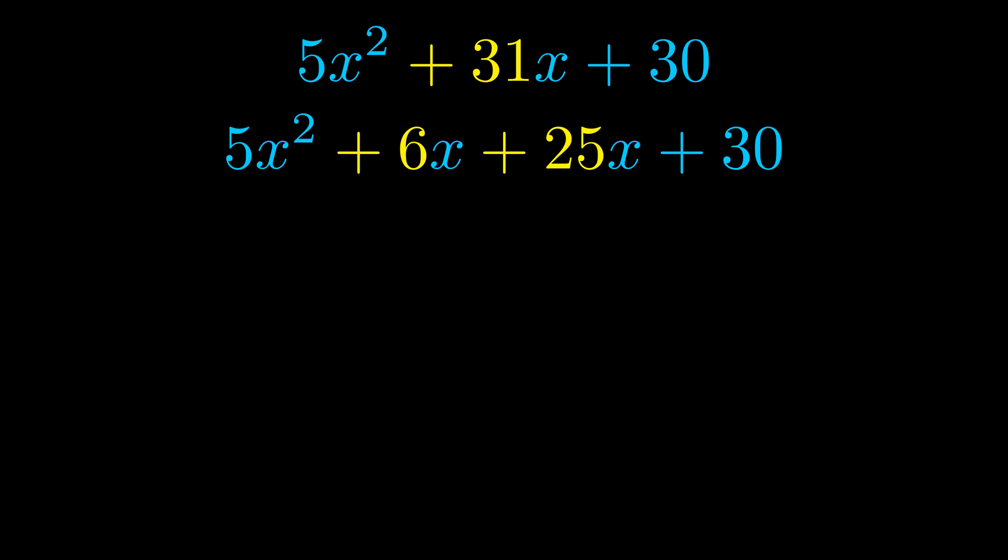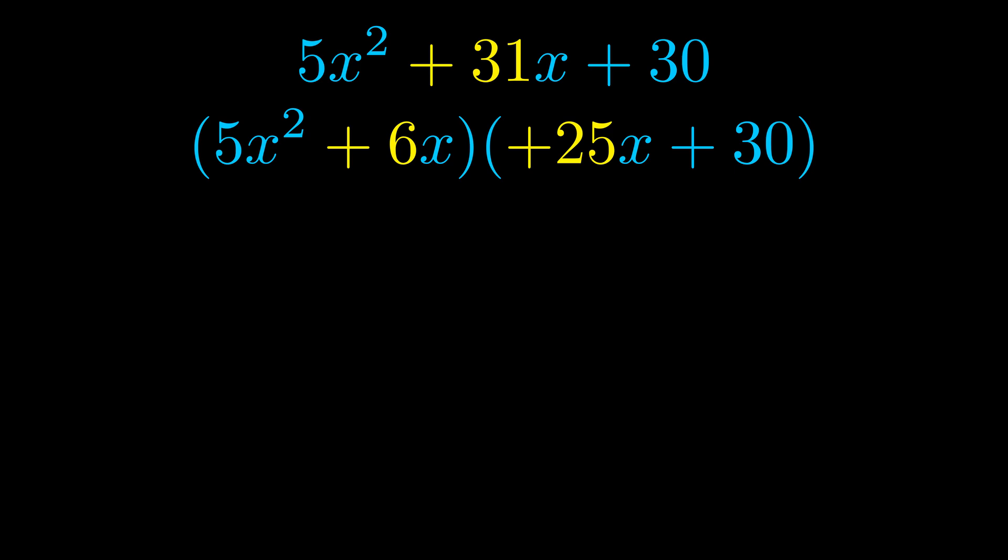Once we've done this we go ahead and we put parentheses around the first term and the last term. And we do that so that we can take the greatest common factor out of both terms. We can see the greatest common factor is now outside in green.